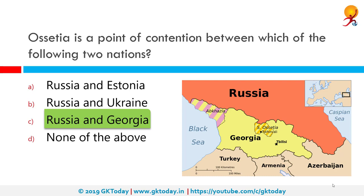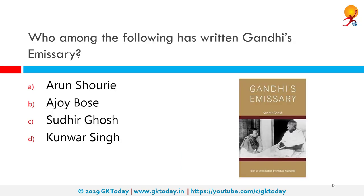The north part is within the Russian Federation while the south part has been taken over by the Russian-backed government of the Republic of South Ossetia. Who among the following has written 'Gandhi's Emissary'? The correct answer is Sudhir Ghosh. In 1946, at the age of 29, Sudhir Ghosh was chosen by Mahatma Gandhi to act as an official emissary between the British Labour government and India in the delicate negotiations which resulted in the country's independence.